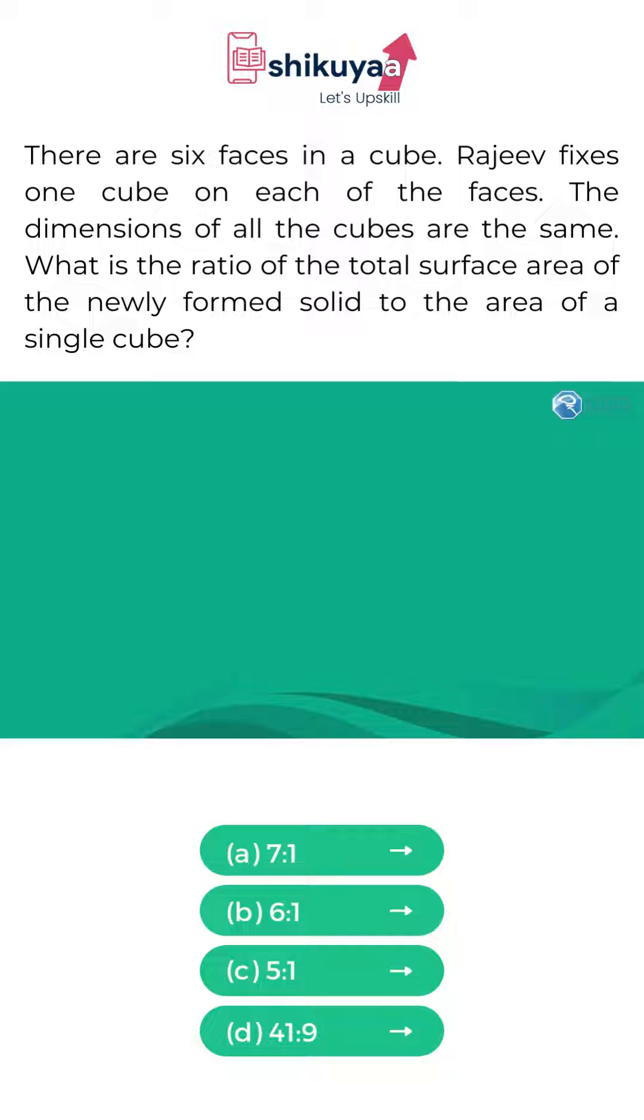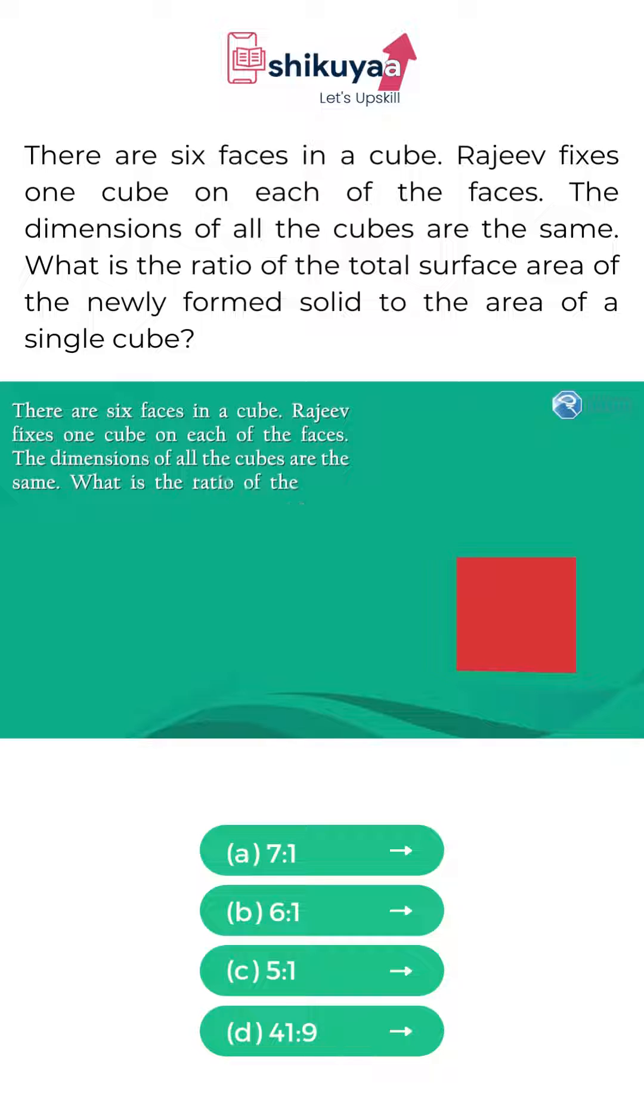So the question is something like this. There are six faces in a cube. Rajeev fixes one cube on each of the faces. The dimensions of all the cubes are the same. What is the ratio of total surface area of the newly formed solid to the area of a single cube?